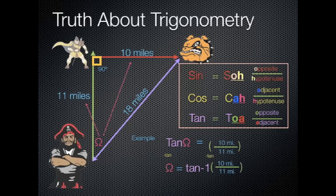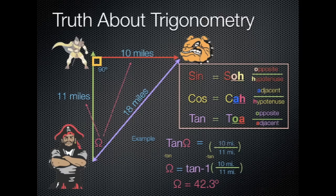There's a special key on your calculator that calculates the answers for you. My calculator gave me omega equals 42.3 degrees. See, now I got two out of three of my angles.